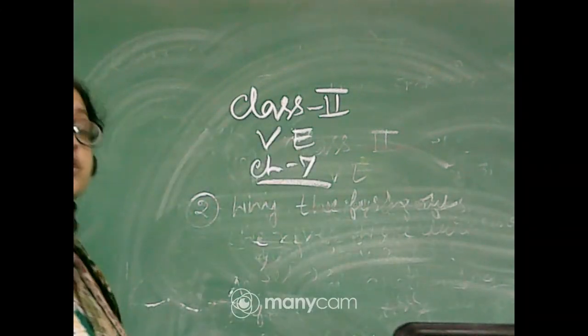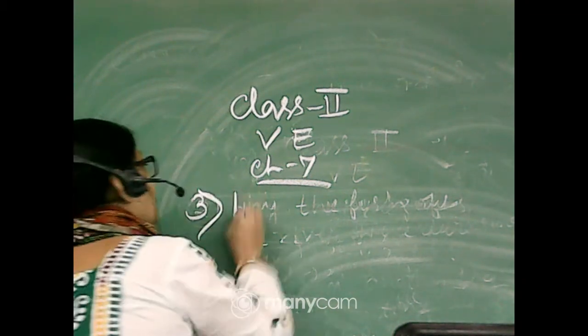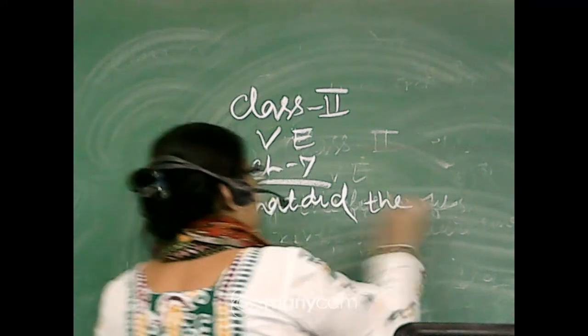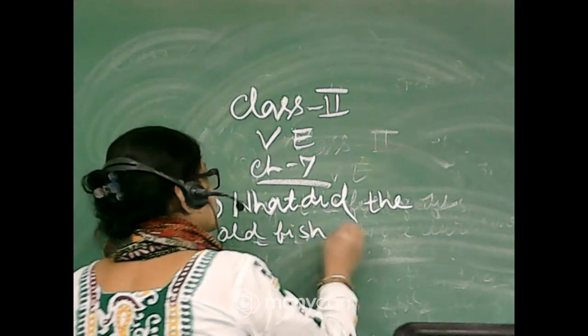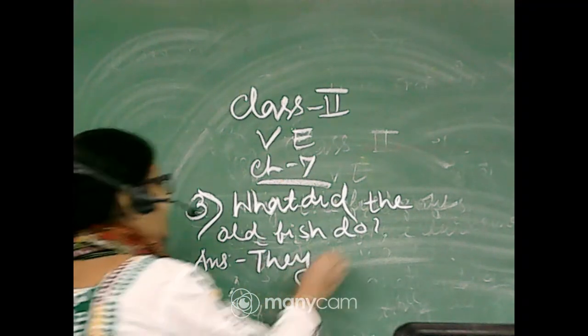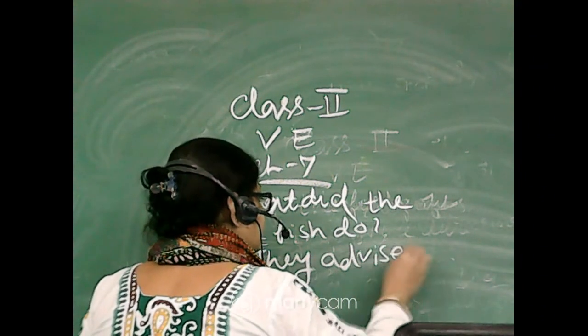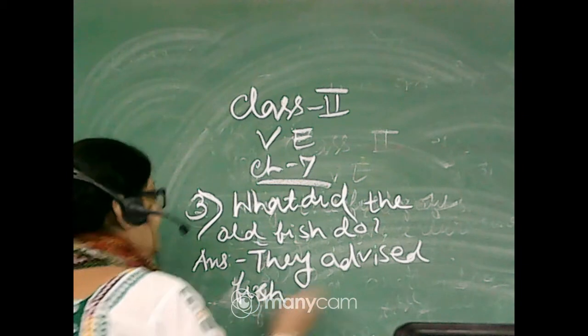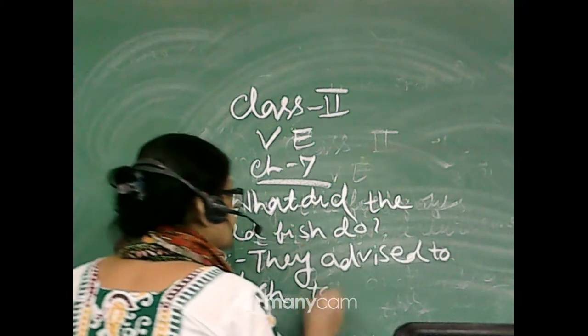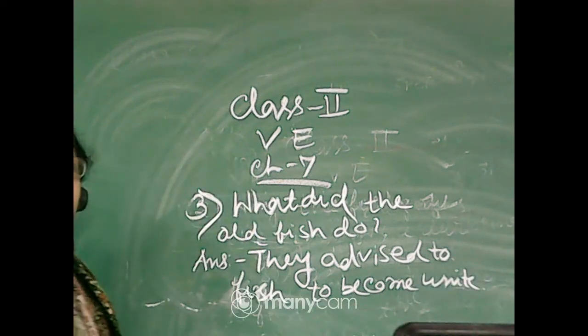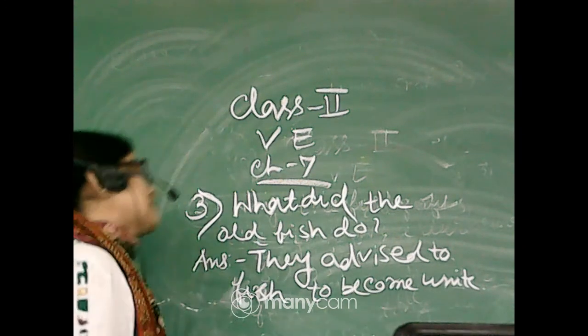What did the old fish do? Answer is there: they advise small fish to become unite. Unite and just live together. Only these things you can write.